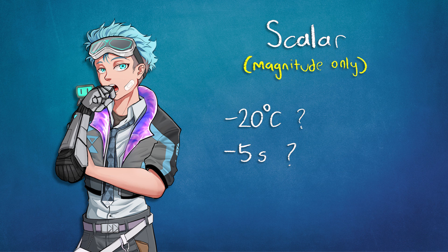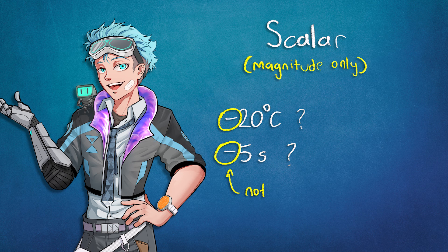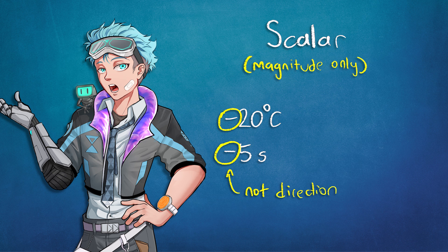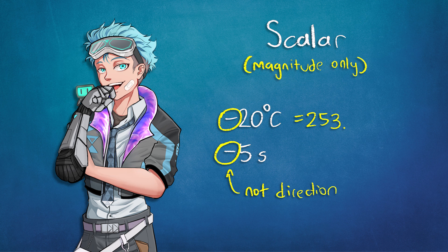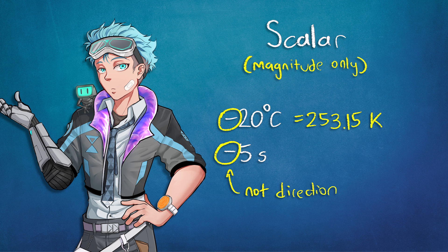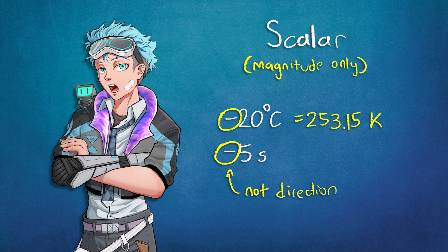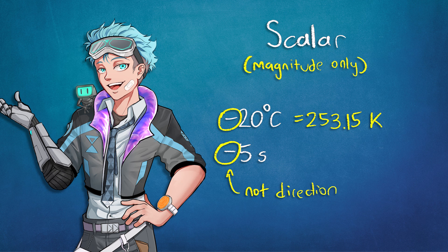Unlike velocity, the sign here does not indicate direction. An object that's minus 20 degrees Celsius doesn't mean it's facing opposite to an object that's 20 degrees Celsius, because these quantities don't depend on the physical orientation or position of the object they're describing. Minus 20 degrees Celsius is also 253.15 Kelvin — an absolute measurement in temperature — and that doesn't have a negative in it. Minus 5 seconds just means taking 5 seconds away from something, because time is not in and of itself dependent on something's physical position or orientation.